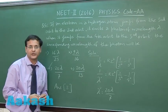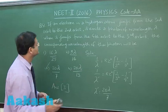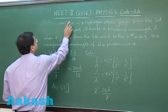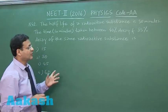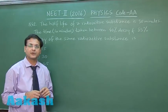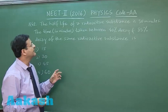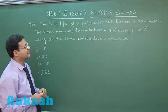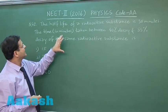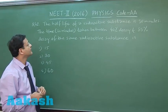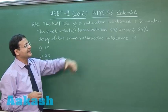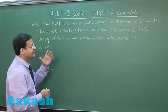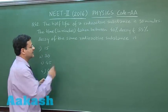This question 42 is based on the concept of half-life of radioactivity. Very straightforward question. It says that half-life is 30 minutes and time taken between 40 percent decay and 85 percent decay. If it has decayed 40 percent, what is left over? Left over is 60 percent.